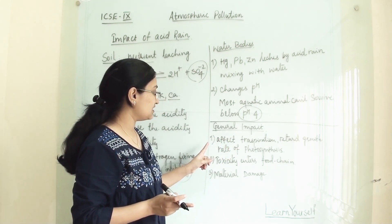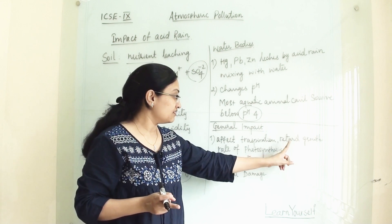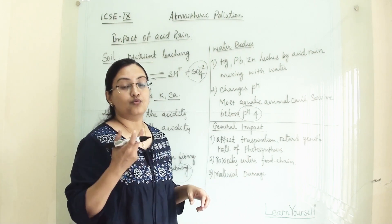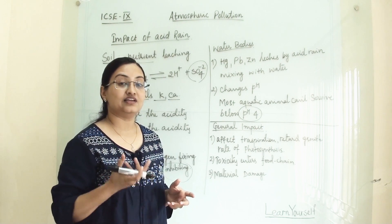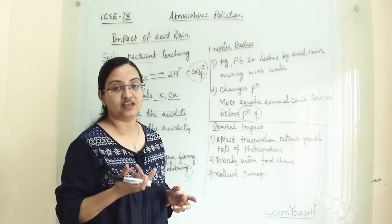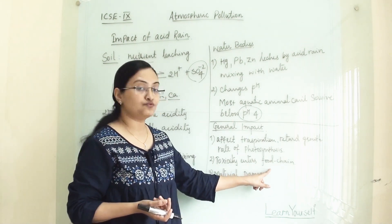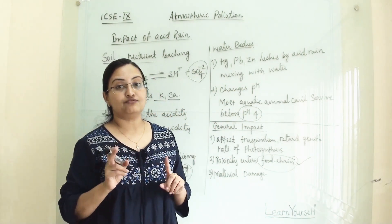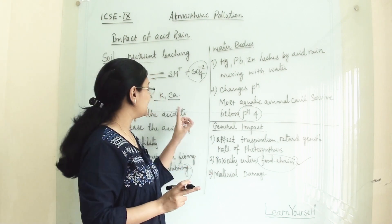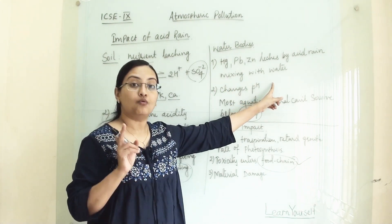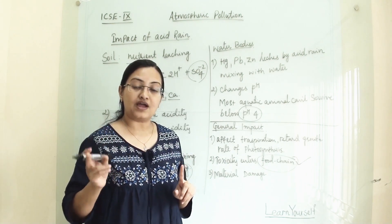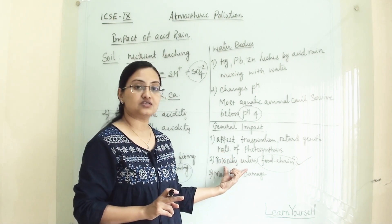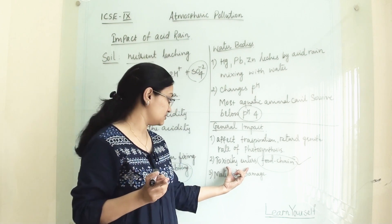Now some general impacts are: it affects the transpiration, gives retard growth, and also affects the rate of photosynthesis of the plants. So where the acid rain traces are more on the soil, the plant growth is not normal and it will not flourish. Second, toxicity enters food chain. This is a very important point. Food chain is very important for us to survive and for our ecosystem. When it enters into the soil and water body, it is very likely to enter into the food system and the human body also. It will cause maximum harm to humans and the ecosystem when it enters the food chain.